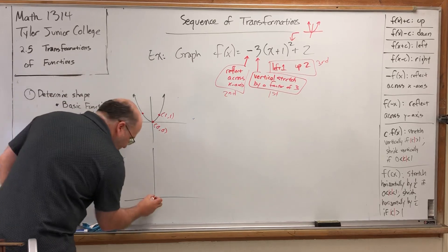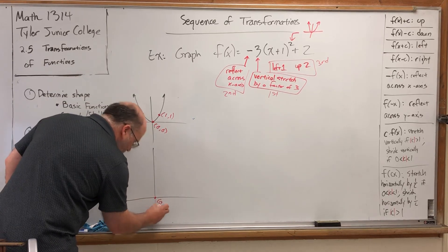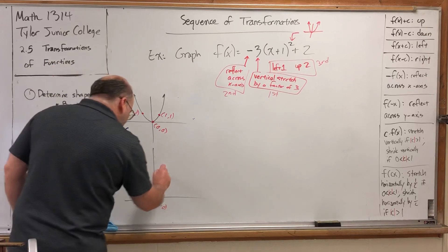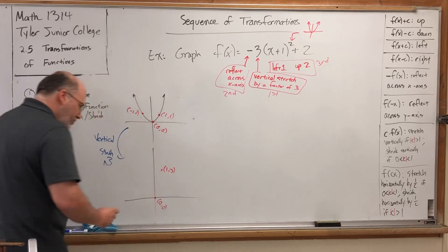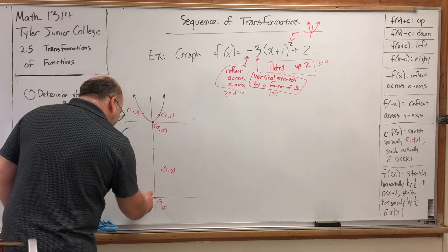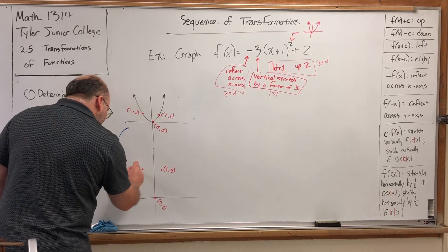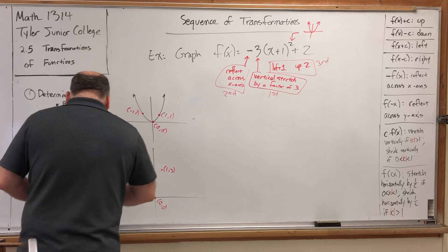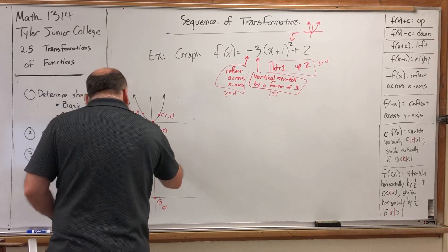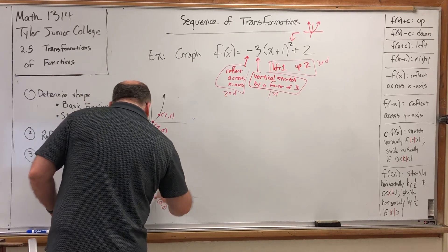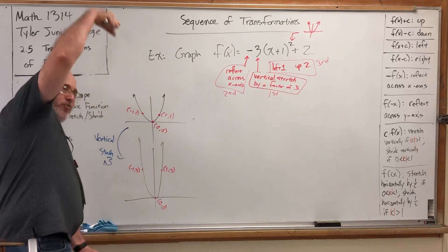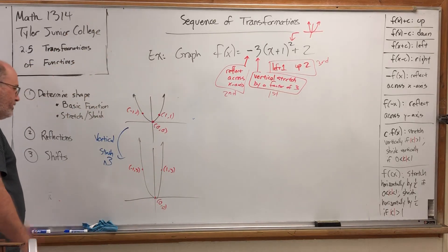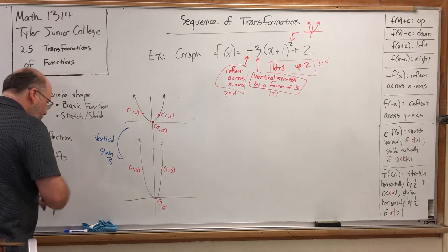If I do a vertical stretch by a factor of 3, I need to triple each y-coordinate. The origin stays put, but 1 comma 1 becomes 1 comma 3, so it gets three times as high as it used to be. And then negative 1 comma 1 gets multiplied to negative 1 comma 3. So if we reconnect those, we'll have a taller, skinnier parabola because it got stretched upwards. So there's the vertical stretch by a factor of 3.